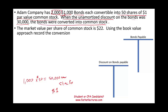Let's look at our books right now. We have $2,000,000 in bonds payable — 2,000 bonds at a face value of $1,000 each gives us $2,000,000 in bonds payable. We also have $30,000 discount on bonds payable. Discount on bonds payable is a contra liability, so it carries a debit balance.